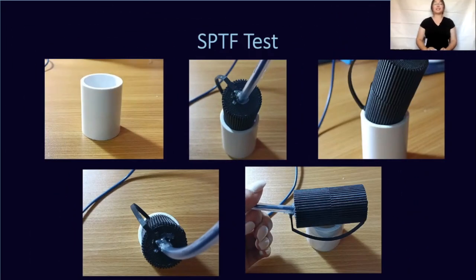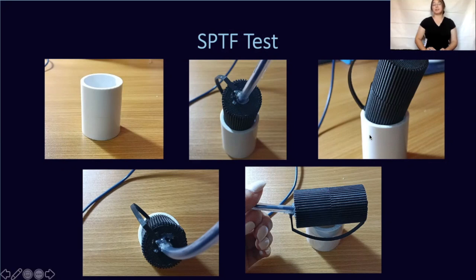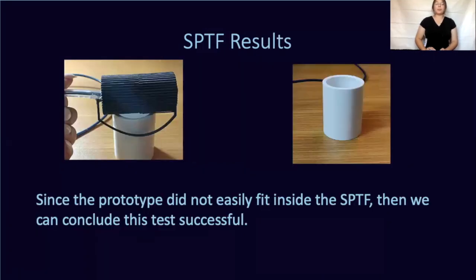Next is the small parts test fixture test. This small cylindrical plastic tube represents the throat of a child — if an object fits inside, it is a choking hazard; if it does not fit, it is not a choking hazard. My prototype did pass, as it is not a choking hazard for children. Since the prototype did not easily fit inside the tubing, we can conclude that my prototype is a non-choking hazard.